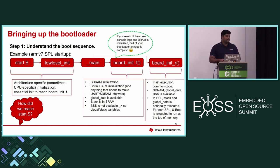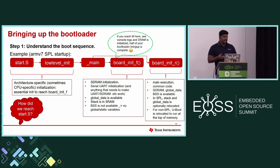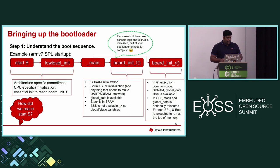Coming to U-Boot bring-up on a new SOC: first you need to understand the boot sequence or boot architecture of your platform. Your ROM may load up the startup core in different ways. Taking an ARM v7 R5 startup core as an example, the entry point is the start.s assembly code with architecture-specific and sometimes CPU-specific initialization — for example, if you have a dual-core cluster of R5, you disable the second core for boot up. The minimum basic functionality needed is to reach U-Boot board_init_f.